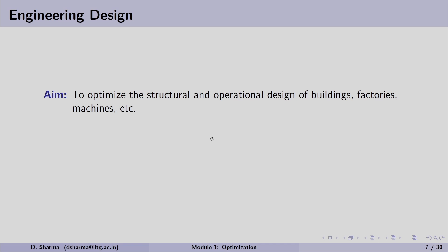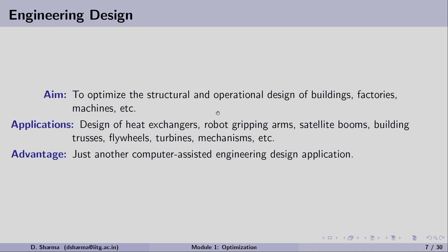The second application is engineering design, where the objective is to optimize the structural and operational design of buildings, factories, machines, etc. This application is widely used in mechanical, civil, electrical, and chemical engineering — we always try to find the optimal engineering design. Applications range from heat exchangers to robot gripping, satellite booms, building trusses, flywheels, turbines, mechanisms, and more. With a computer and an optimization algorithm, we can find an optimal solution for our engineering problems.